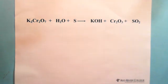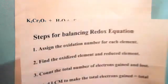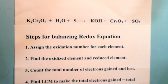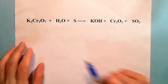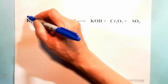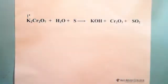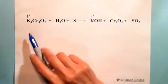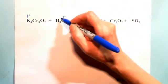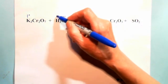Follow the steps from redox one. The first step is to assign the oxidation number for each element. In this situation we need to see what is not changed. Potassium, because it is a very strong metal, is always +1 — never changes. Oxygen is -2, never changes. And hydrogen is +1, not changed.